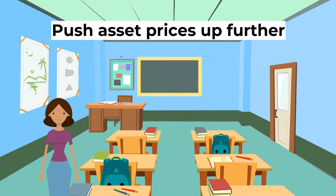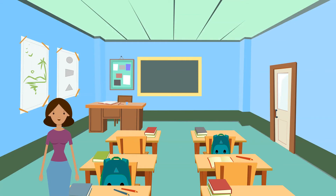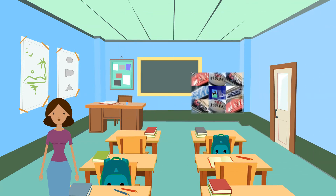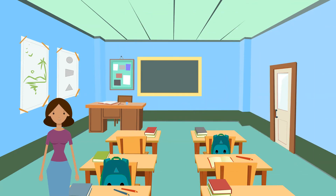Quantitative easing may also push asset prices up further. Banks have higher reserves, meaning they can increase their lending to households and businesses so both consumption and investment increase, and people can buy on credit. Commercial banks may lower their interest rates as they are receiving so much money from the Bank of England and so can offer very low interest deals to customers. The increased money supply means the price of money falls — interest rates are the price of money — which will encourage borrowing and therefore increase investment and consumption, increasing aggregate demand.